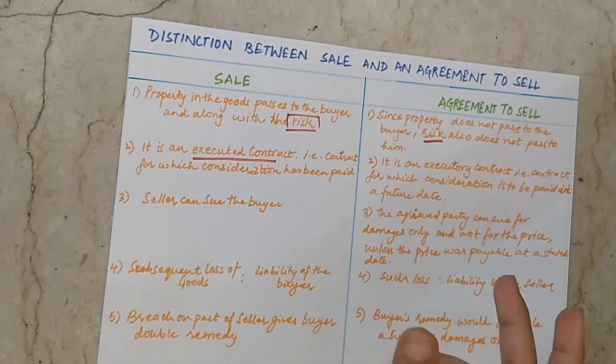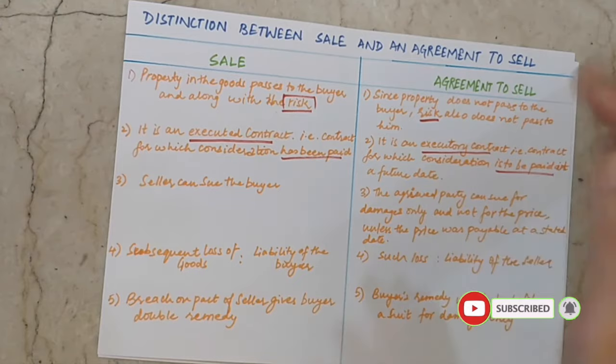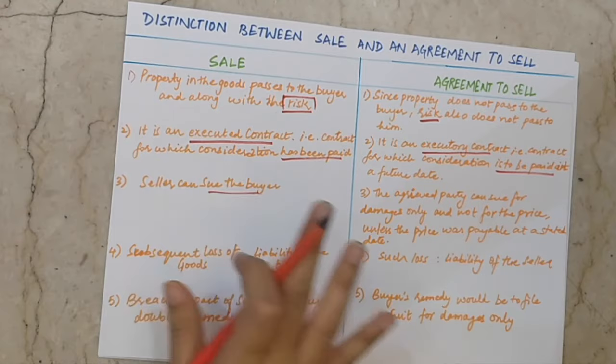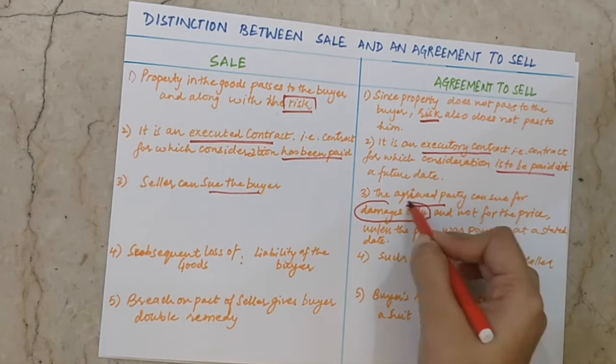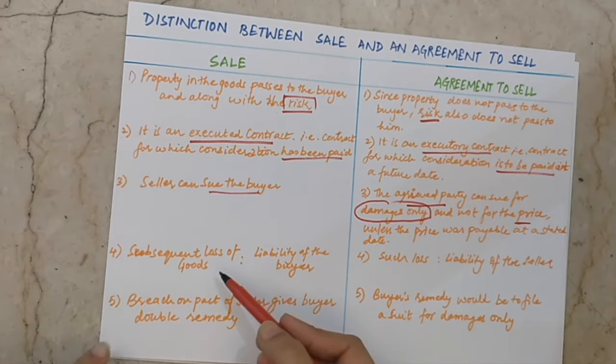Second difference: a sale is an executed contract. In an agreement to sell, payment is to be made at some future date. In a sale, the seller can sue the buyer for the price if the buyer refuses to buy. In an agreement to sell, the agreed party can only claim damages — not the price — because ownership has not been transferred.